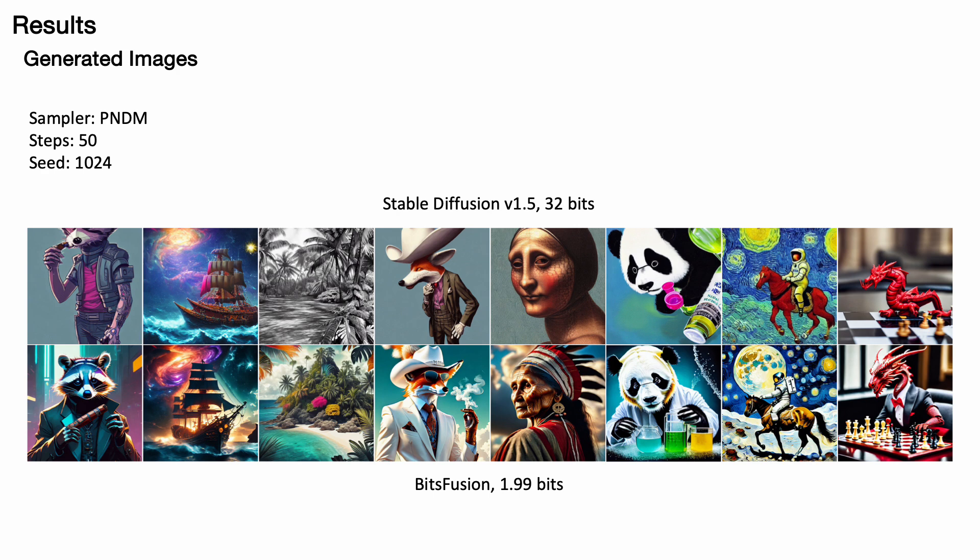Let's see the results. These results showcase our BitsFusion method. We employed identical settings for image generation using stable diffusion V1.5 and our 1.99 bits BitsFusion utilizing the PNDM sampler, 50 inference steps, and a random seed of 1024. The first row displays images generated from the full precision stable diffusion, while the second row features images from our model.